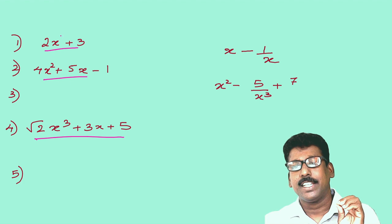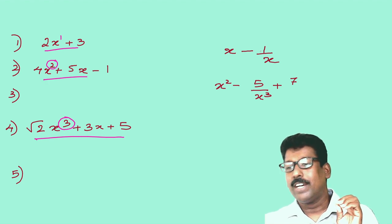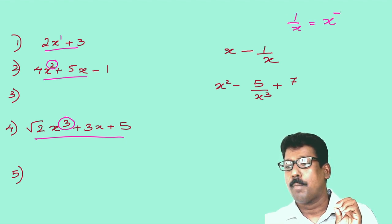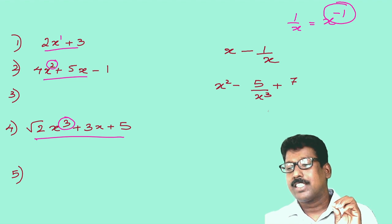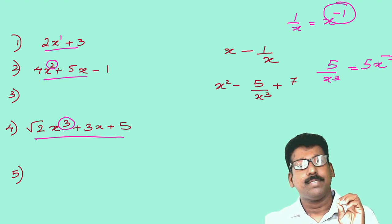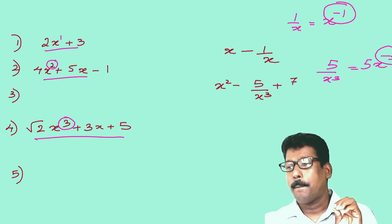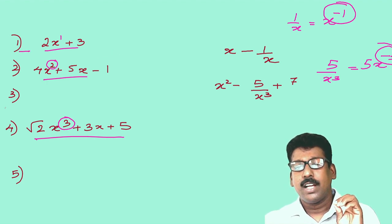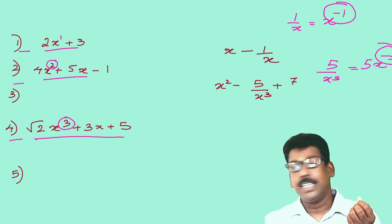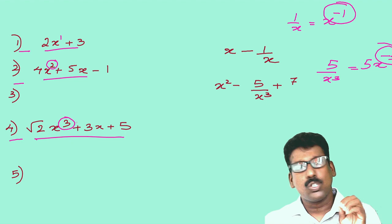So what does polynomial actually mean? Look at the first, second, and fourth expressions — the power of the variable x is 1, 2, 3, etc. But in x minus 1/x, the term 1/x equals x raised to negative 1, so the power is negative. And x² minus 5/x³ equals 5x raised to negative 3, so the power is also negative. In the first, second, and fourth expressions, the power of the variable is non-negative, so those are polynomials.